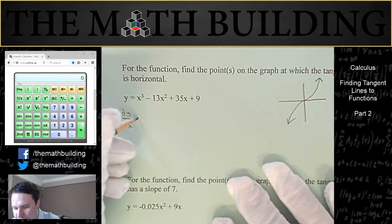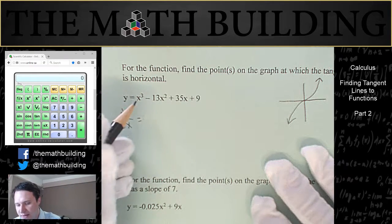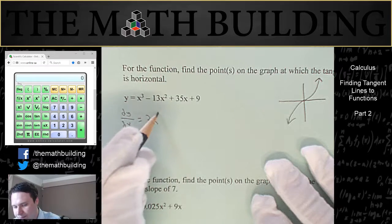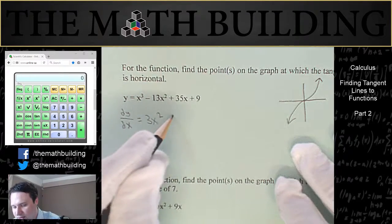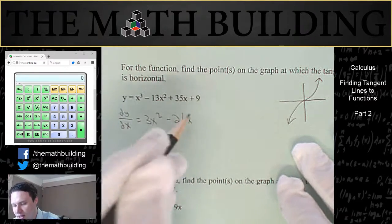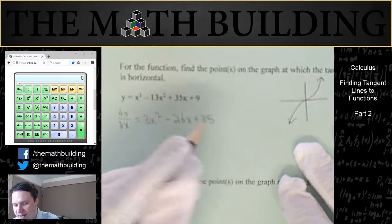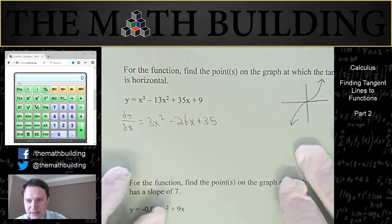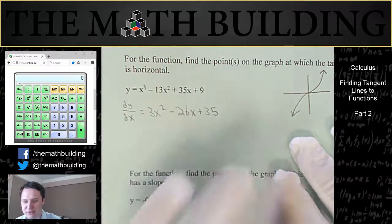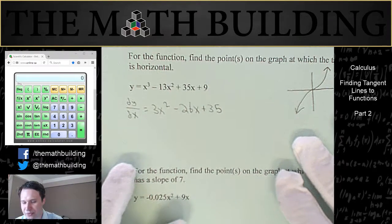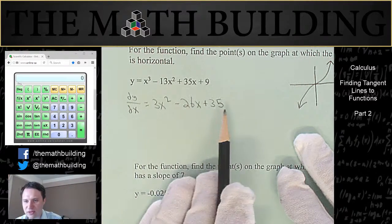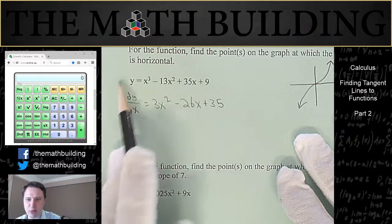So in this example, the derivative is going to be 3x squared. Bring down the 2 minus 26x plus 35. And the derivative of 9 is just zero. So I don't even need to include any of that. I could put a plus zero if I wanted to, but I'm not going to. So here's our derivative function. This is the slope of this graph at every point.